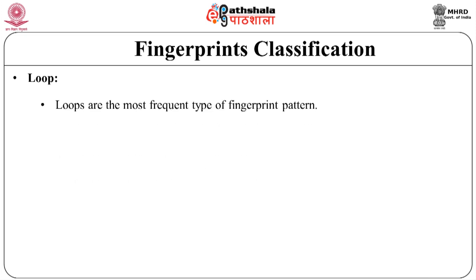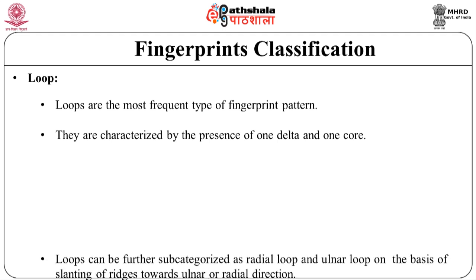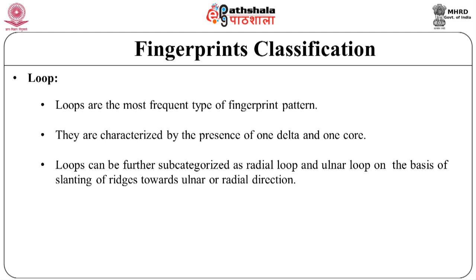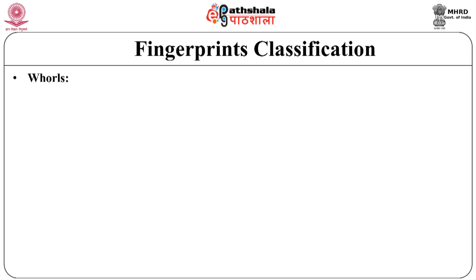Loops are the most frequent type of fingerprint pattern. They are characterized by the presence of one delta and one core. Loops can be further sub-categorized as radial loop and ulnar loop based on the slanting of ridges. If the ridges enter and exit from the little finger side, the pattern is termed an ulnar loop. If they enter and exit from the thumb side, it is termed a radial loop.